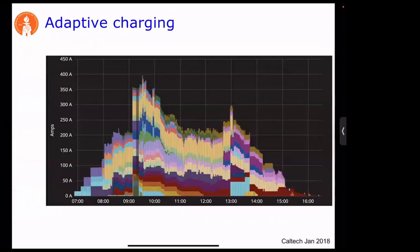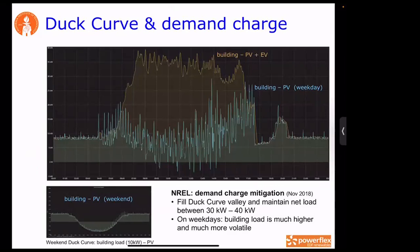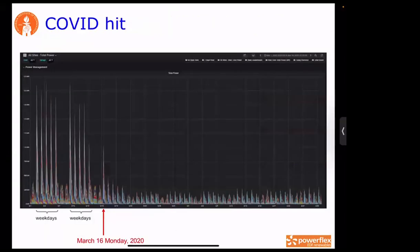Here are some deployment pictures. A January 2018 plot shows charging rate in amps over time, with each color curve corresponding to one EV's charging profile, stacked. An NREL deployment in November 2018 aimed at demand shaping: the goal was to control EVs so that the net load — building load minus PV plus EV — stayed under 40 kilowatts. The system achieved this through real-time control quite well.